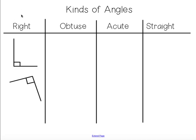Okay, so we can put a little note, 90 degrees. Obtuse angles are angles that are more than 90 degrees and less than 180.